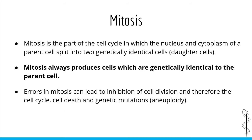Mitosis is the part of the cell cycle in which the nucleus and cytoplasm of a parent cell split into two genetically identical cells known as daughter cells. It is important to know that the daughter cells are genetically identical to each other and the parent cell because there is another type of cell division in which this is not the case — meiosis — which is the type of cell division that occurs in germ cells, another name for sperm and oocytes. So remember: in mitosis the daughter cells are always genetically identical; in meiosis they are not.